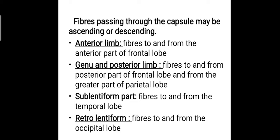The fibers to and from the anterior part of the frontal lobe pass through the anterior limb. Fibers to and from the posterior part of the frontal lobe and the greater part of the parietal lobe pass through the genu — the angle joining the anterior and posterior limbs — and partly through the posterior limb as well. Fibers to and from the temporal lobe pass through the sublentiform part, while fibers to and from the occipital lobe pass through the retrolentiform part.